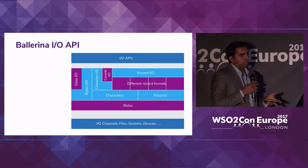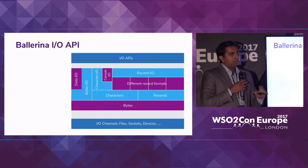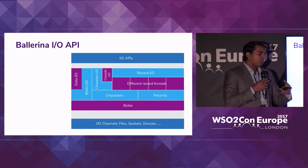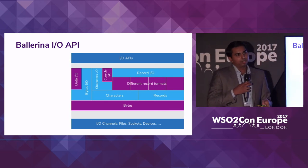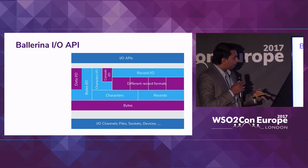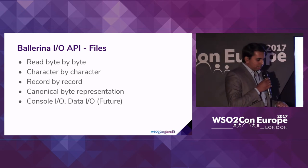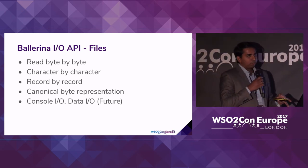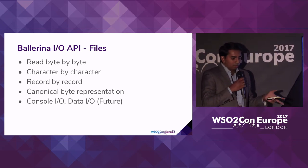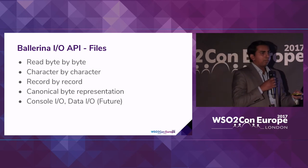In the Ballerina 0.95 release we have implemented the file-related functionality at this layer. If you check the Ballerina 0.95 release you can see there are samples on the Ballerina by Example website to read file content at byte level, character level, and record level. Currently we have completed the implementation for file-based I/O APIs, and we are working on implementing sockets and devices-based I/O APIs as well.